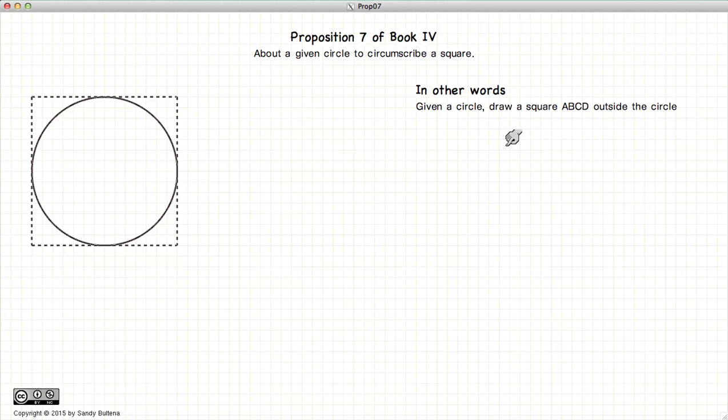In this proposition we are going to demonstrate the methods required to draw a square on the outside of a circle.